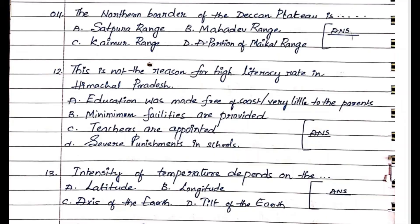Question number 11: The northern border of the Deccan Plateau is. Option A. Satpura Range, Option B. Mahadev Range, Option C. Kaimur Range, Option D. A portion of Michael Range. The answer is Option A. Satpura Range.